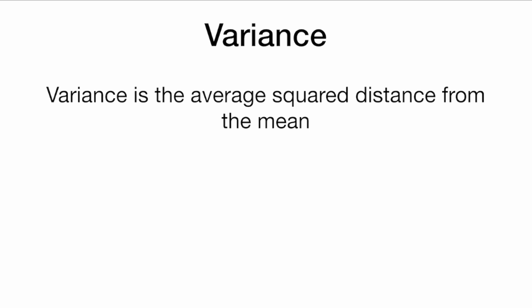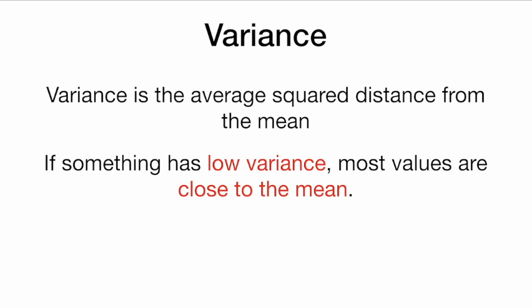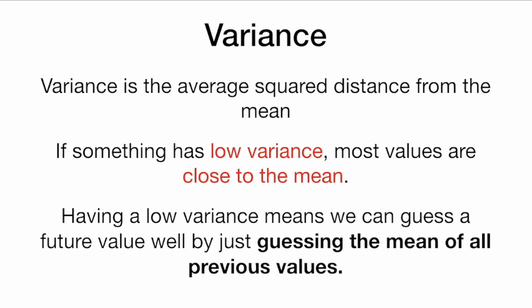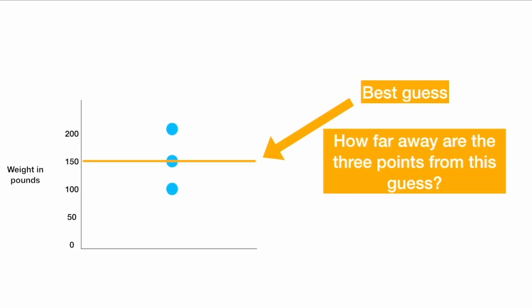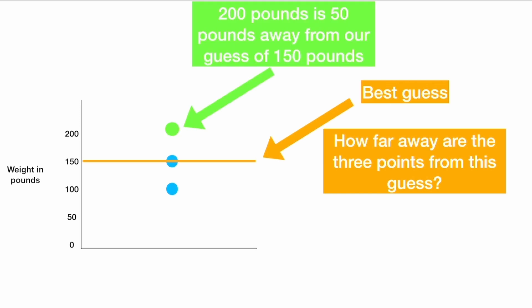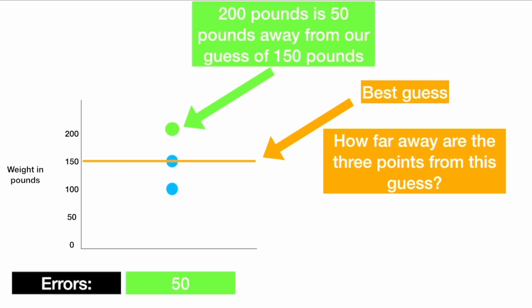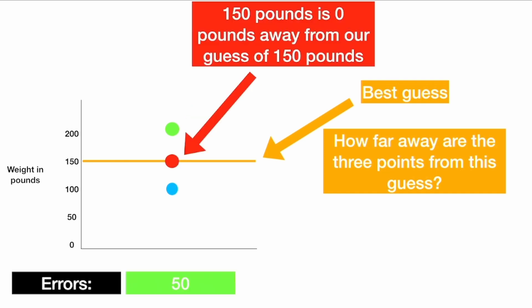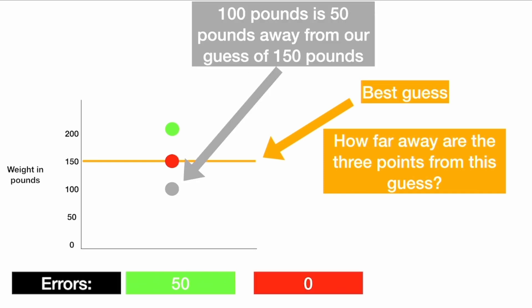Let's take a brief detour to talk about variance. Variance is the average squared distance from the mean. If something has low variance, most values are close to the mean, and we can guess a future value well by just guessing the mean of all previous values. So when we guess that the next human is 150 pounds, the person who is 200 pounds is 50 pounds away — an error of 50. The person who is 150 pounds is 0 pounds away — an error of 0. And the person who is 100 pounds is 50 pounds away — again, an error of 50.